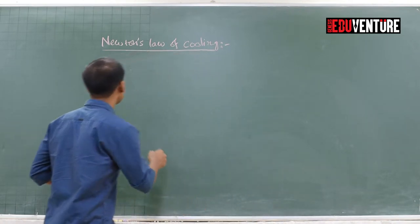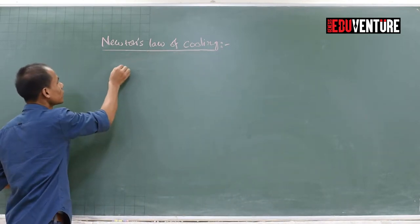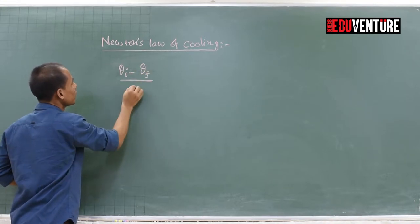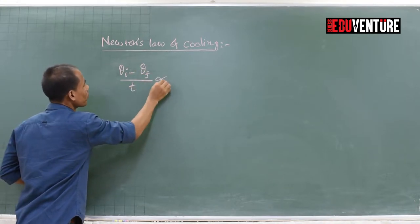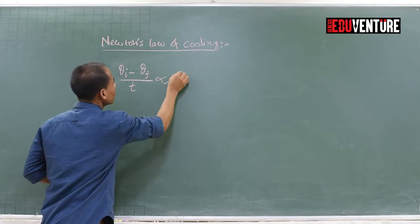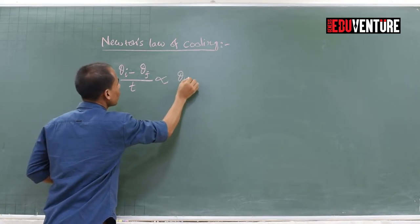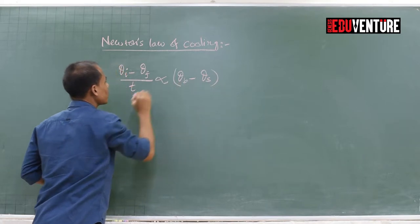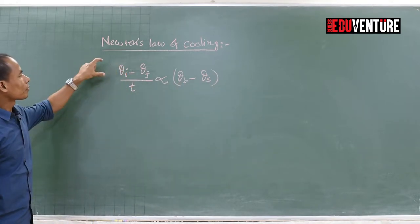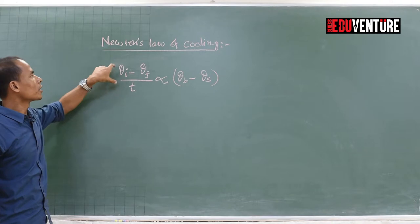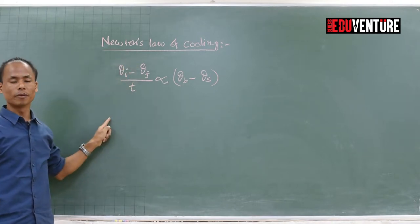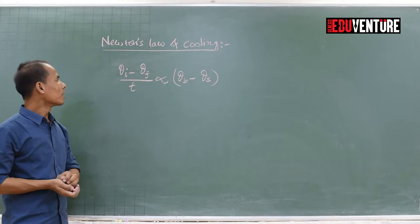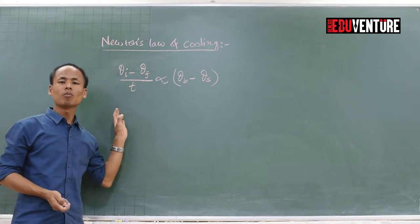So Newton's Law of Cooling gives us: (theta-i minus theta-final) divided by time t, which is proportional to (theta of the body minus theta of the surroundings). This is the mathematical relation of Newton's Law of Cooling.